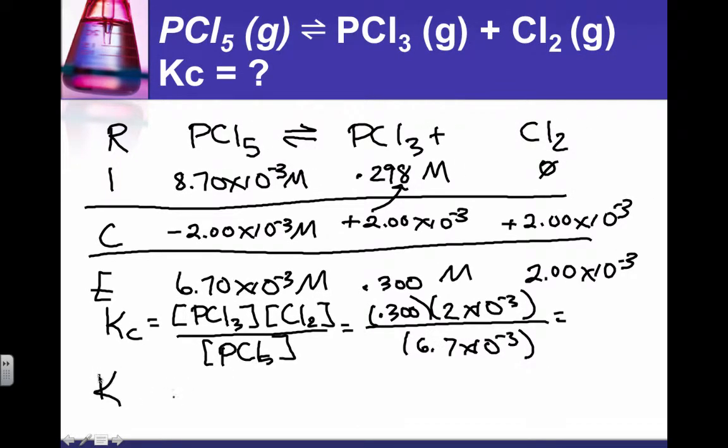So Kc is 0.08955. We better call that 5.6. 0.0896.